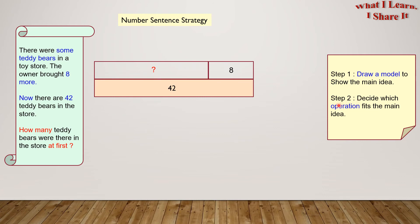Step 2. Decide which operation fits the main idea. As you can see here, 42 is the whole and 8 is a part of it. We have to find the remaining part. This remaining part we can find by subtracting. So we will use the subtraction operation.